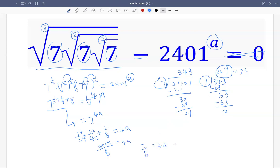So 7 over 8 equals 4a. Divide by 4 on both sides, or multiply by one-quarter on both sides. So a equals 7 over 8 times one-quarter, which is 7 over 32.